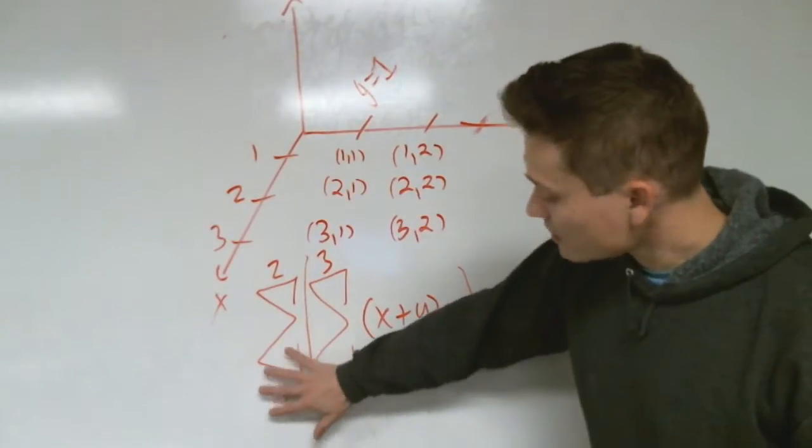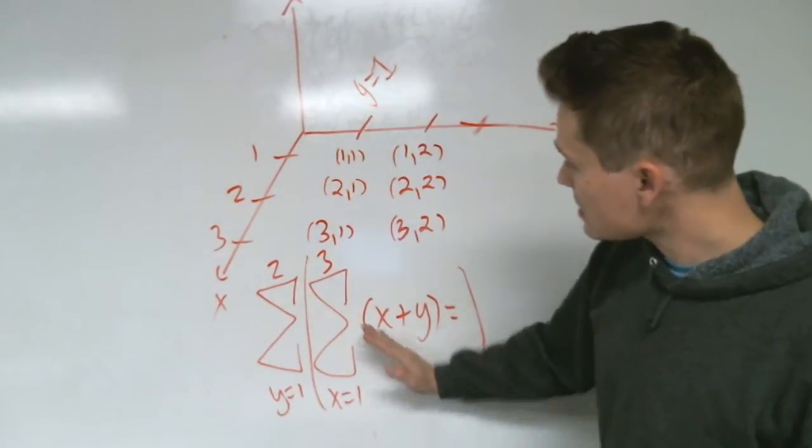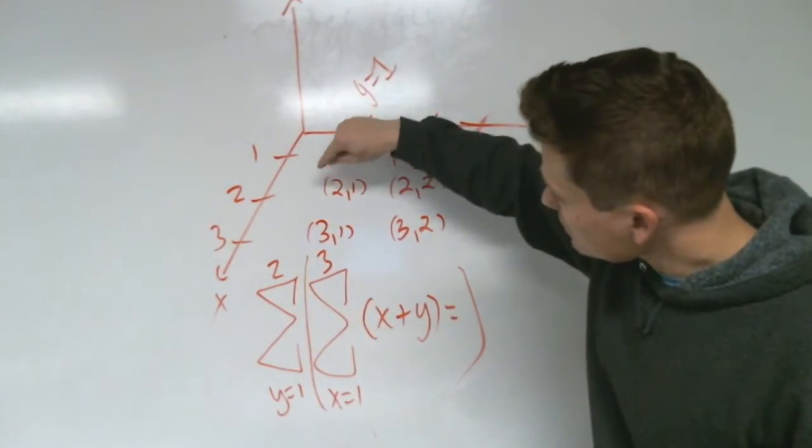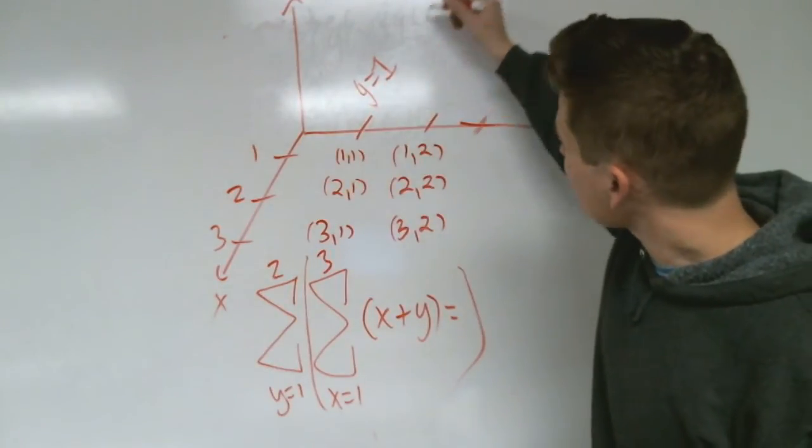So you fix the outer sum at 1, and then the inner sum says jump over the x's like this. So let's do that right now. We will have this: 1 and 1.